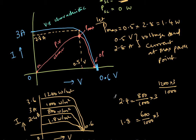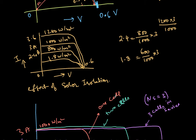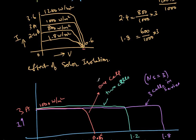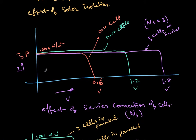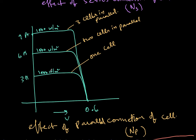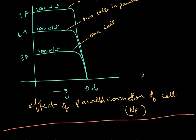As solar irradiation increases, the short circuit current increases proportionally — for 1000 W/m² it was 3A, for 1200 W/m² it increases proportionally, and for 800 W/m² it decreases. There is not much variation in the open circuit voltage. For series connection of cells, voltages add up: open circuit voltage goes from 0.6V to 1.2V, 1.8V, and so on, while current remains the same. For parallel connection, currents add up and voltage stays the same.